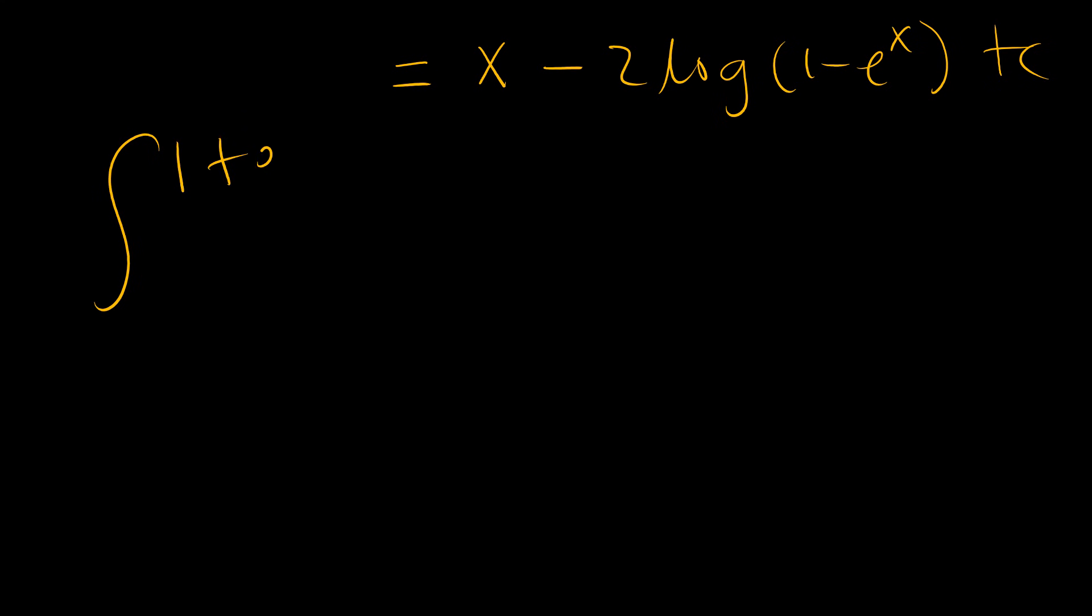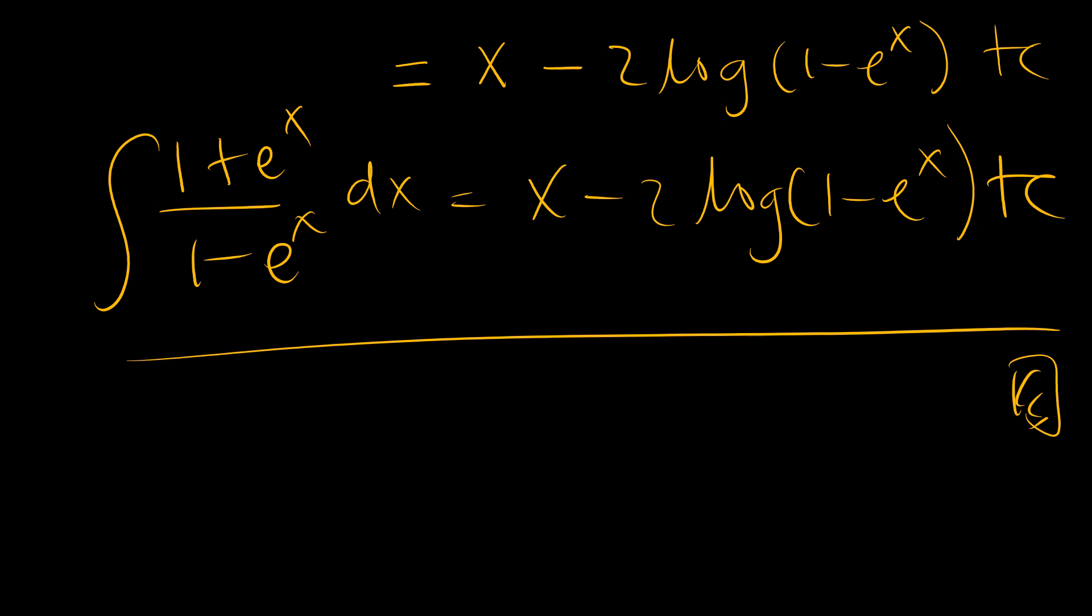In other words, the integral of 1 plus e to the power x over 1 minus e to the power x is equal to x minus twice natural logarithm of 1 minus e to the power x plus the integration constant. And that is the easy answer that was required of us.